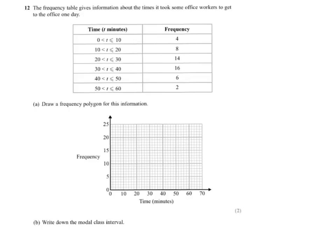The frequency table gives information about the times it took some office workers to get to the office one day. Some of them were very quick, took between 0 and 10 minutes, but at the other extreme some were taking 50 to 60 minutes, living a long way away from the office.